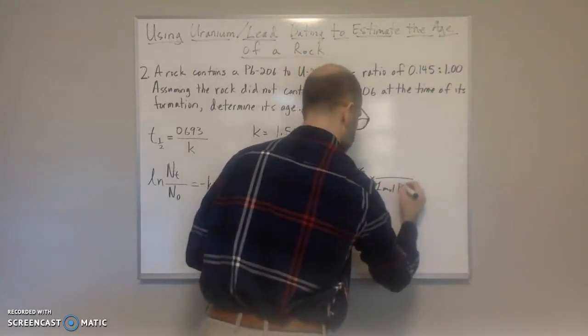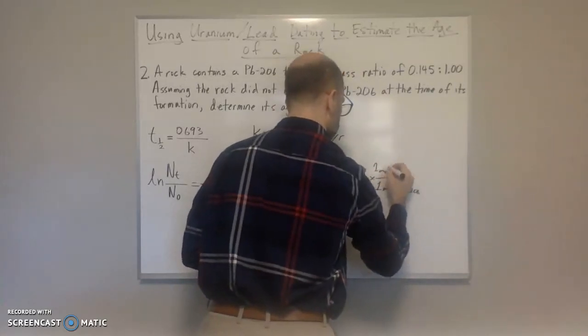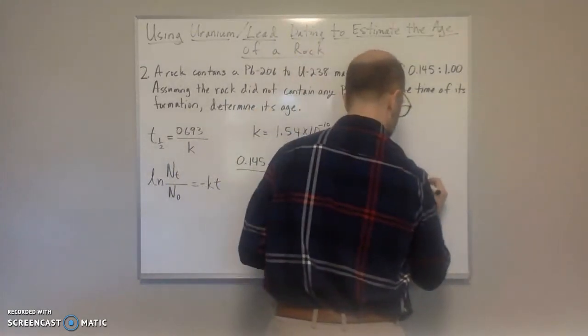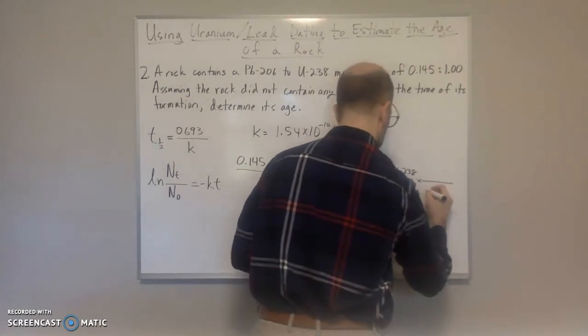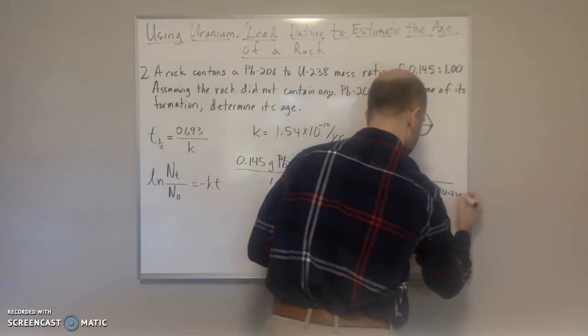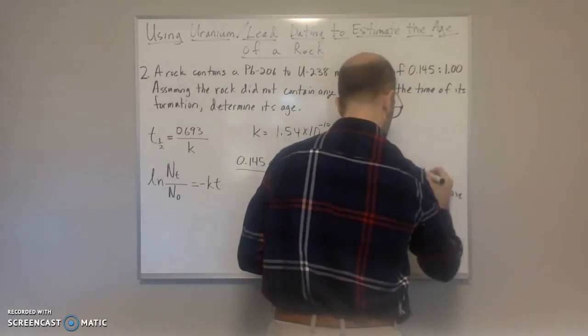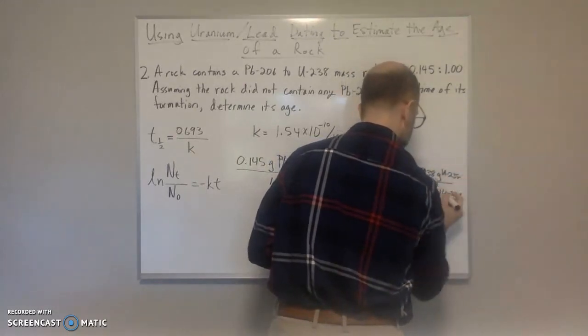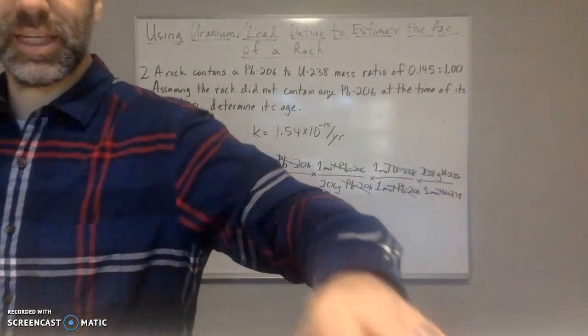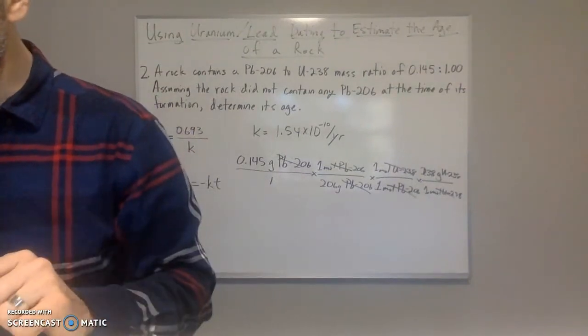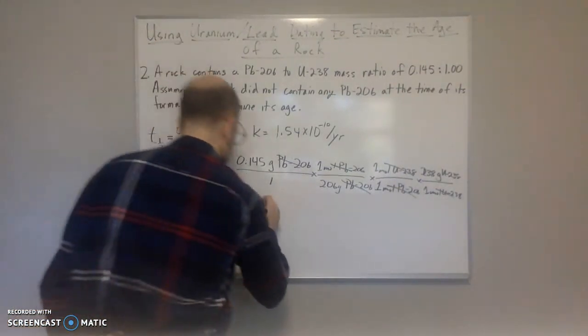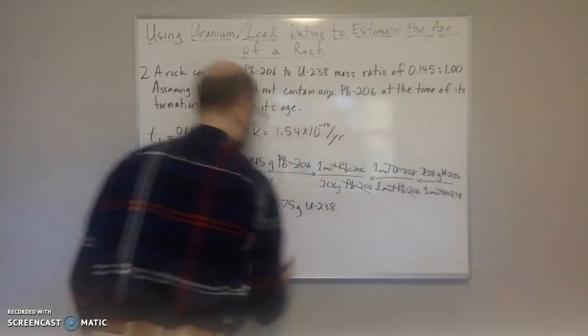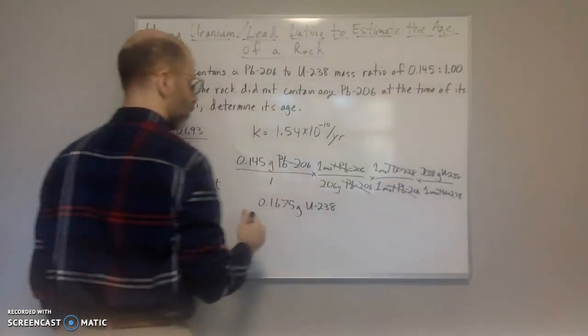1 mole of lead-206 to 1 mole of uranium-238. So moles cancel out. And then you got the molar mass. So we're going to use 1 mole of U-238 to 238 grams of U-238. Moles cancel out. Now we can calculate the answer. So we get 0.1675 grams of U-238.